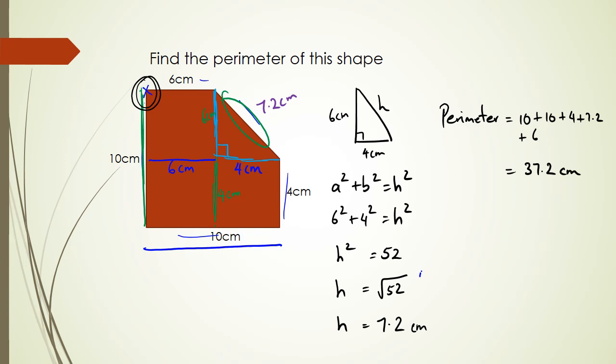Just remember: with Pythagoras' theorem your formula is a squared plus b squared equals hypotenuse squared. When you find the hypotenuse, don't forget to take the square root. And remember, the hypotenuse is always the longest side in your right angle triangle.